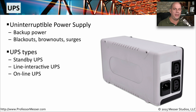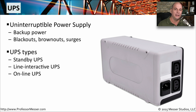A more flexible type of UPS is the line-interactive UPS. With the line-interactive UPS, you're able to cover brownouts and surges because it's able to adjust the power output based on what it's seeing on the power line itself. A UPS that is always on and available is the online UPS — it's always providing you with power through the batteries and is constantly recharging the batteries based on the power coming in. That way, if you have a power outage, there's no converting over to battery backup since you're always running on battery power.